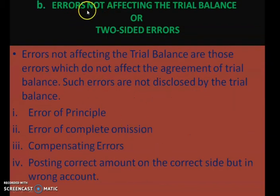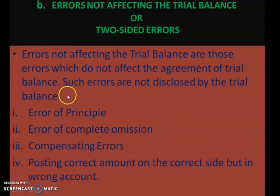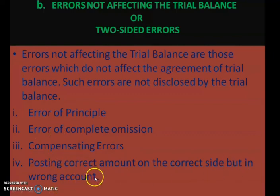Errors not affecting the trial balance are known as two-sided errors. These are errors which do not affect the agreement of trial balances and are not disclosed by the trial balance. Examples include error of principle, error of complete omission, compensating errors, and posting the correct amount on the correct side but in a wrong account. In these cases, both debit and credit aspects have gone wrong.